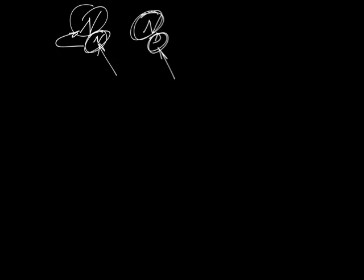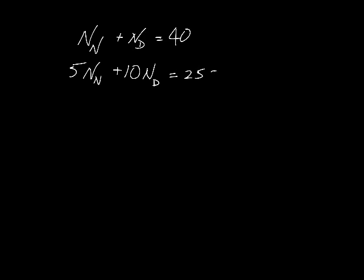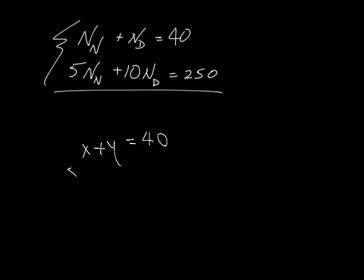If we have a system of equations, like example 17.1, they say the number of nickels plus the number of dimes equals 40, and 5 times the number of nickels plus 10 times the number of dimes equals 250. When we were doing systems before, this would be x and y, so we'd have x plus y equals 40 and 5x plus 10y equals 250.